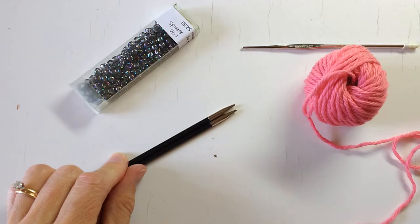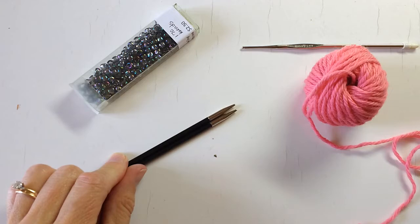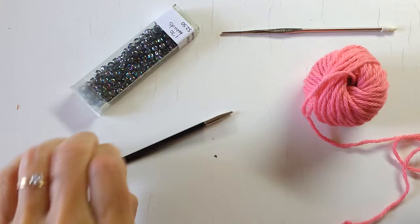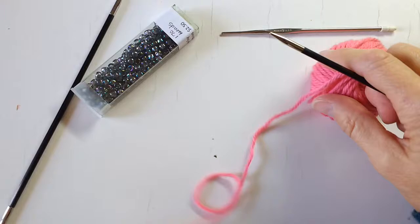Okay, so to do our beaded picot cast on I'm going to use the yarn, needles, beads, and a crochet hook. This cast on starts with a knitted cast on, and we're going to start by putting on five stitches on the needle.